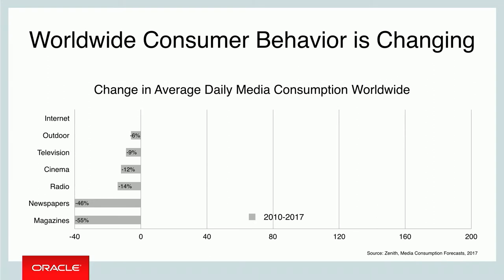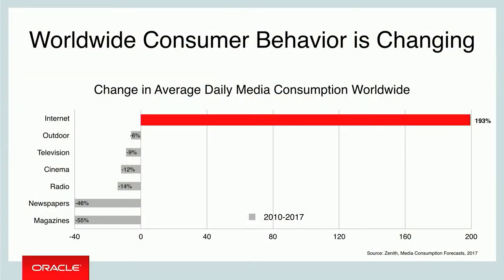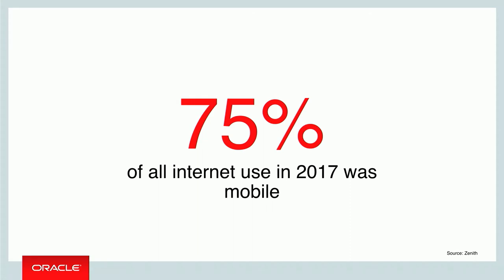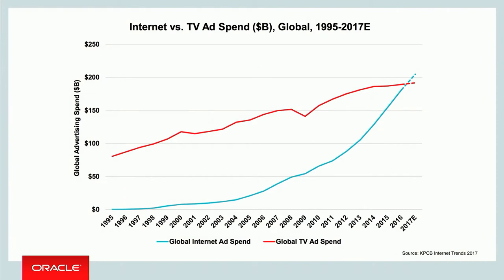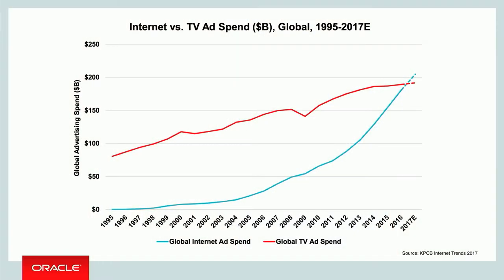With the rise of smartphones and people spending more time on their phones to consume media — TV, games, any type of content — there's actually been a tremendous decrease in where people are spending time across all other mediums. The only one that's had an increase is the internet, which includes digital and mobile. In fact, 75% of all internet use in 2017 was mobile-related. And for the first time in 2017, digital advertising is expected to actually surpass TV advertising.